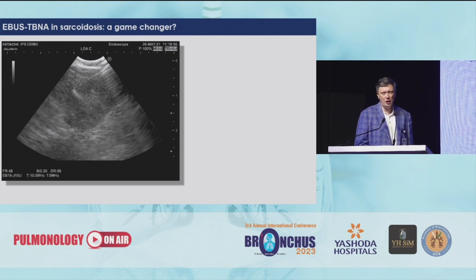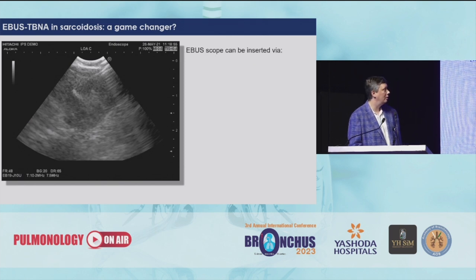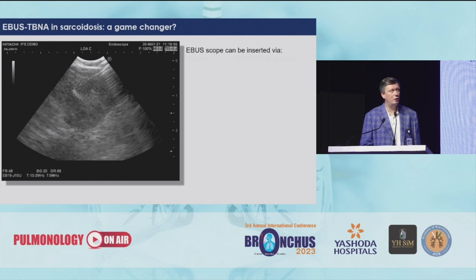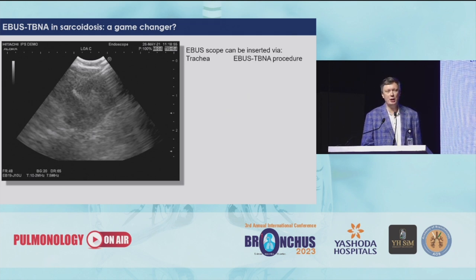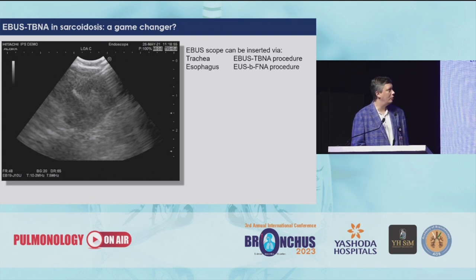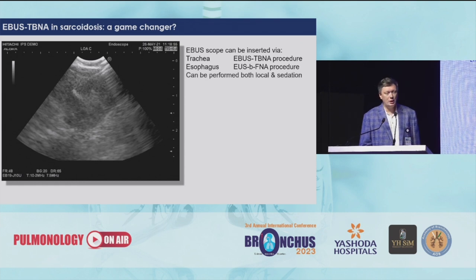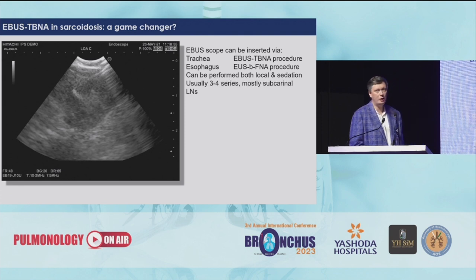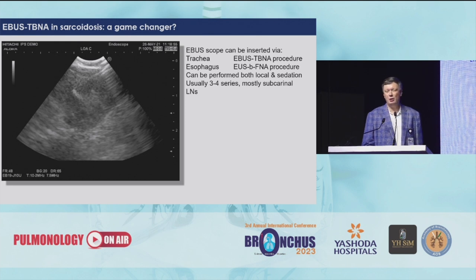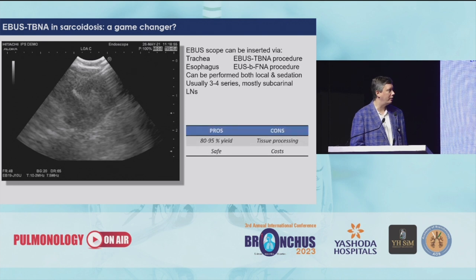A possibly game-changer in diagnosing mediastinal forms of sarcoidosis is EBUS. EBUS can be performed by a transbronchial approach when we put the EBUS scope inside the bronchial tree. We can also use EBUS through the esophagus, which is called the EUS procedure. Mostly we perform this under conscious sedation or general anesthesia, but it can also be done under local anesthesia with transcricoid injection. Usually we make three to four passes, mostly in the subcarinal area.